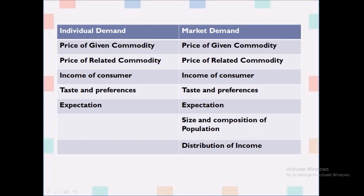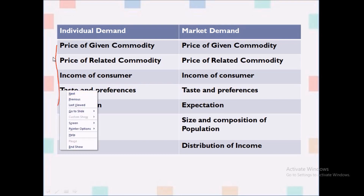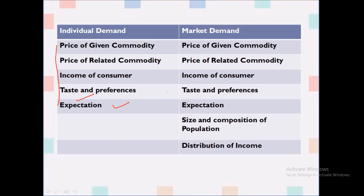In the last lecture we discussed individual demand and its factors. First was the price of the given commodity, second is price of related commodity, third is income of the consumer, fourth is taste and preferences, and fifth was expectations. We discussed these points in the last videos.